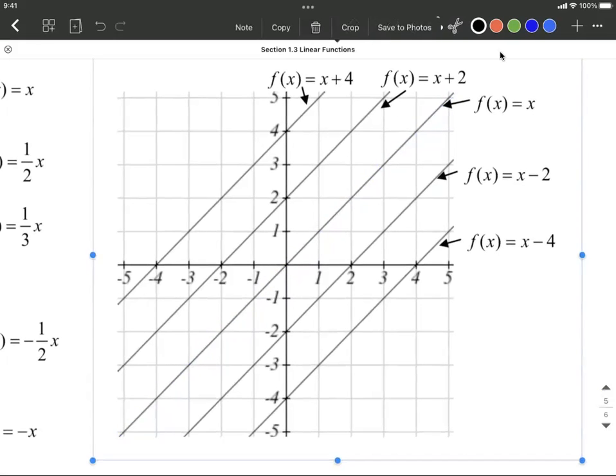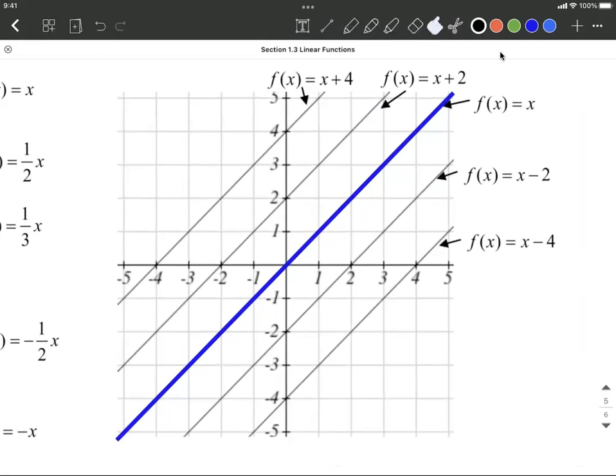Now, if I think about x plus 2, that has a different y-intercept. Or you can think about it as being this exact same graph, picked up and moved vertically up 2 units. You'll notice it's the exact same graph, moved up 2 units.